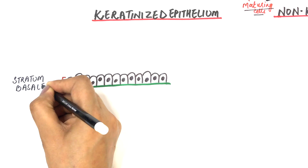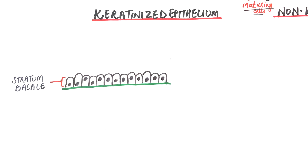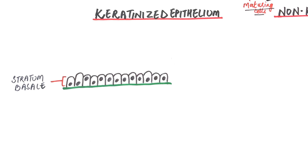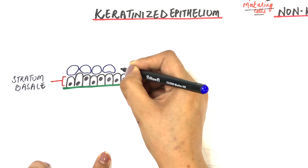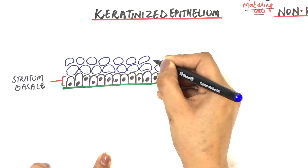The basal layer is a layer of cuboidal or columnar cells lying close to the basal lamina. It is one cell thick in thinner sites of the oral cavity, like the floor of the mouth, and two to three cell layers thick in thicker sites of oral epithelium, that is in the cheeks and palate. Above the basal layer is the stratum spinosum, or the prickle cell layer.